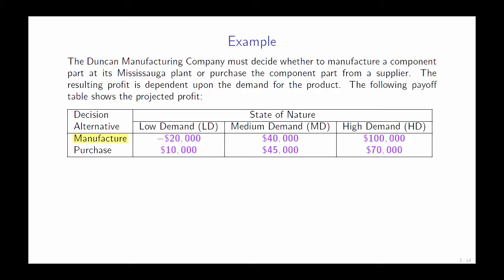The decision alternatives are to manufacture or purchase the component, and the following outcomes are low demand, medium demand, and high demand. So if the company were to manufacture the component when it is in high demand, the projected profit is $100,000.